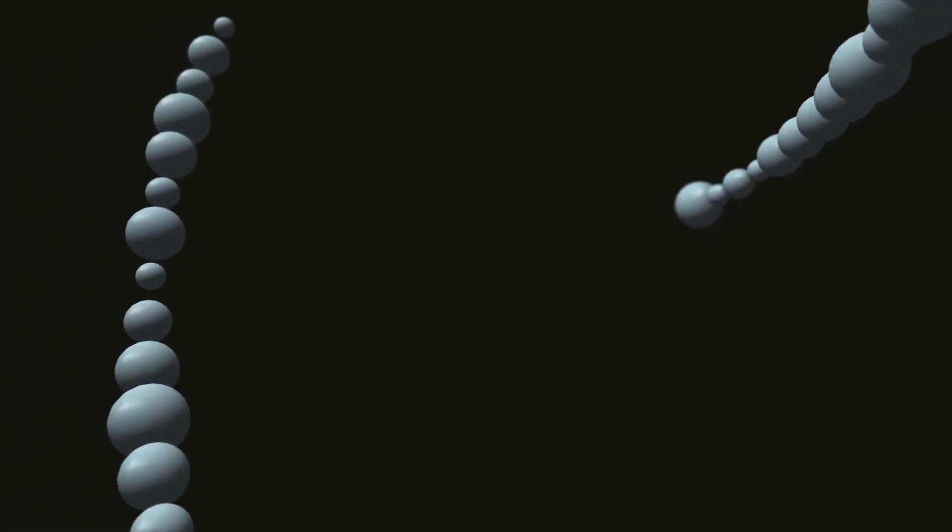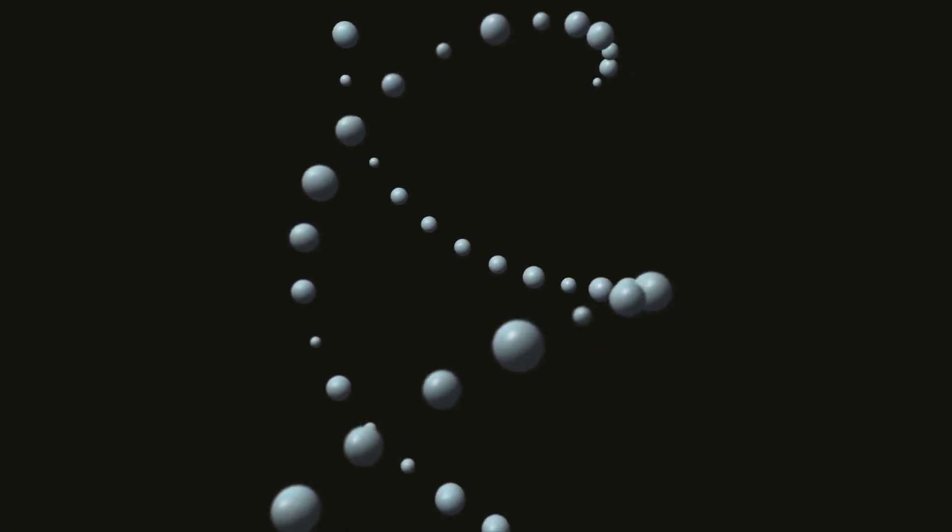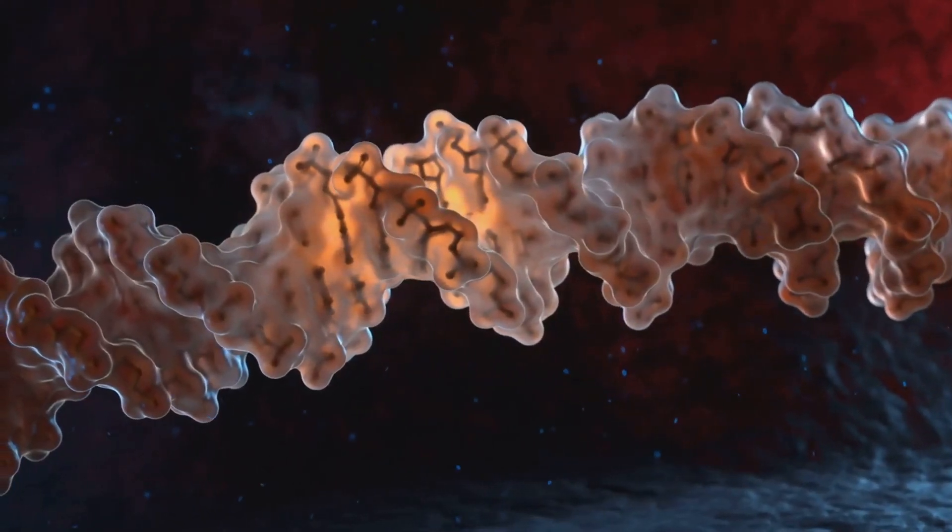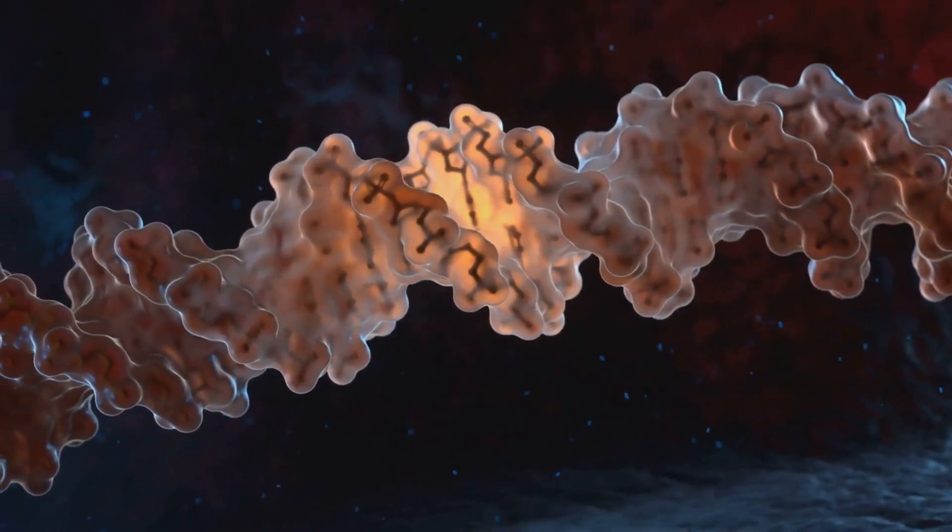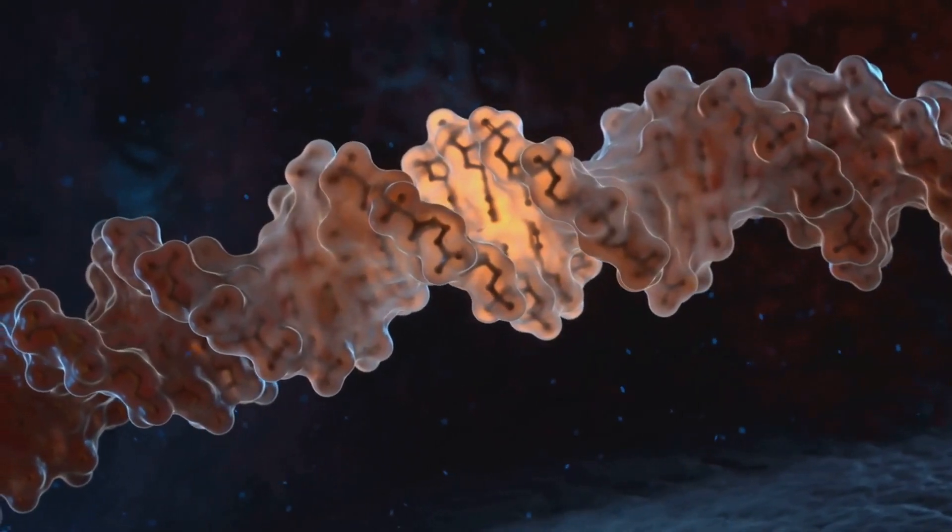Like DNA holds instructions for building a living thing, multiverse models suggest that the rules of each universe could be coded into reality itself. This means that the fundamental constants and laws that govern our universe might be just one possible configuration among countless others. In this view, the multiverse is like a vast cosmic library, with each universe representing a different book, each containing its own unique story.